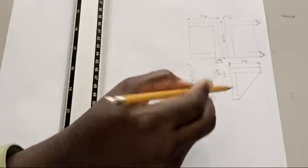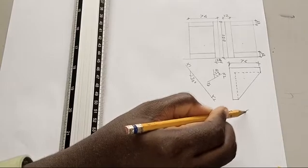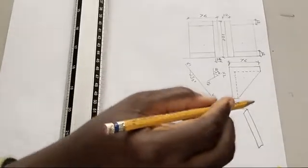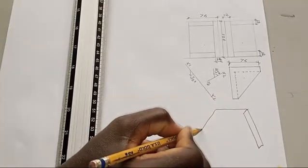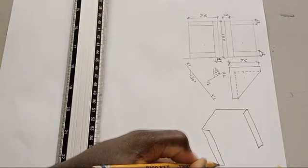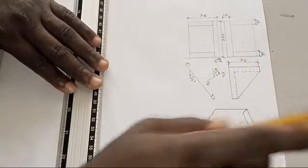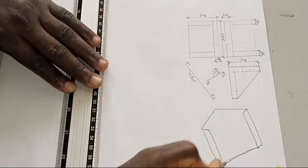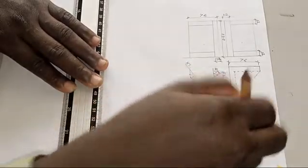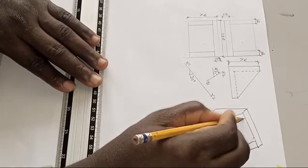So this particular one now, the isometric view will look like this. This way, come down, this one goes this way, this one goes up, goes this way like that, and this is connected this way. It has a thickness like this.